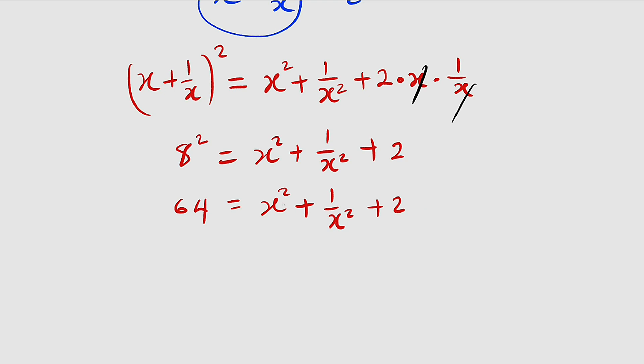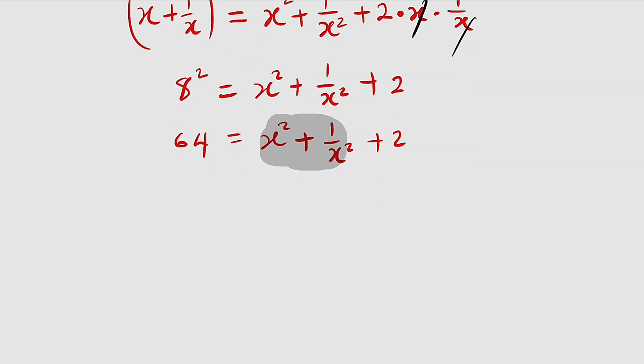And to the right hand side we have x² + 1/x² plus 2. Now you can clearly see that this is what we are looking for, x² + 1/x². So we can make it the subject. By subtracting 2 from both sides we have x² + 1/x² = 64 - 2.